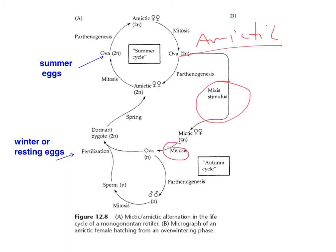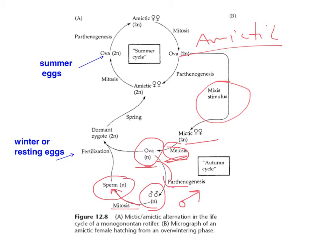Meiosis here is critical. Diploid females, when stimulated, produce haploid ova via meiosis. Those develop parthenogenetically into males — a haploid egg developing into an adult becomes male. The haploid male produces sperm via mitosis. That sperm fertilizes eggs from the female, producing a zygote that becomes dormant — the winter or resting egg. In spring, when conditions improve again, those resting eggs hatch into amictic females.